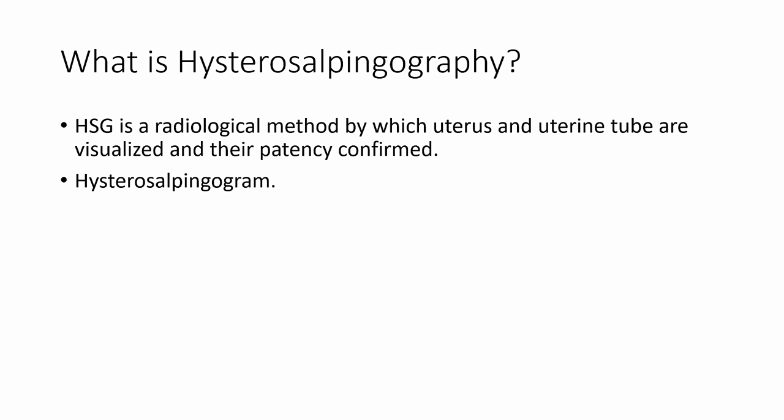The X-ray of Histosalpingiography is known as a Histosalpingiogram. It shows the female reproductive tract, which includes the fallopian tubes, uterus, and vagina.